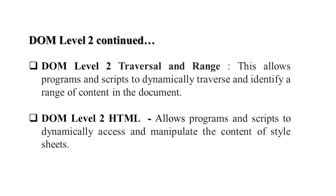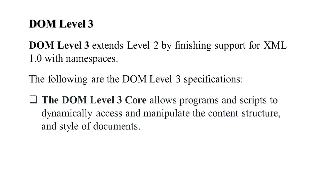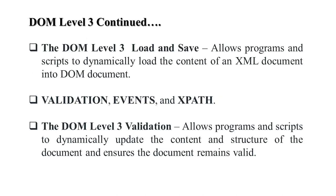DOM level 3 extends level 2 by finishing support for XML with namespaces. Its specifications include: DOM level 3 core, which allows programs to dynamically access and manipulate content, structure, and style; DOM level 3 load and save, which allows programs to dynamically load XML document content into the DOM; and DOM level 3 validation, which allows dynamic updates to content and structure while ensuring the document remains valid.